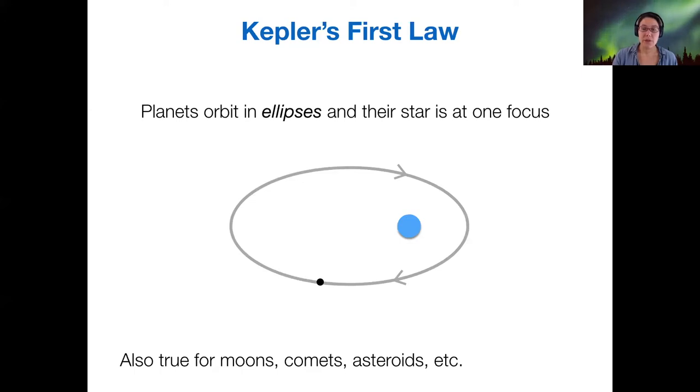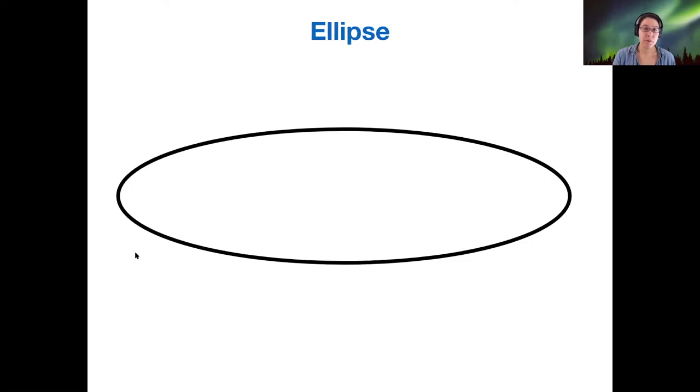The first of his three laws is that the planets orbit the sun in ellipses, and there are two foci of an ellipse. The star is at one of those foci. The same orbital pattern isn't just for planets around stars. It also holds for moons around their planets, for comets and asteroids around the sun, and basically any other objects in orbit where there's one object orbiting a more massive one.